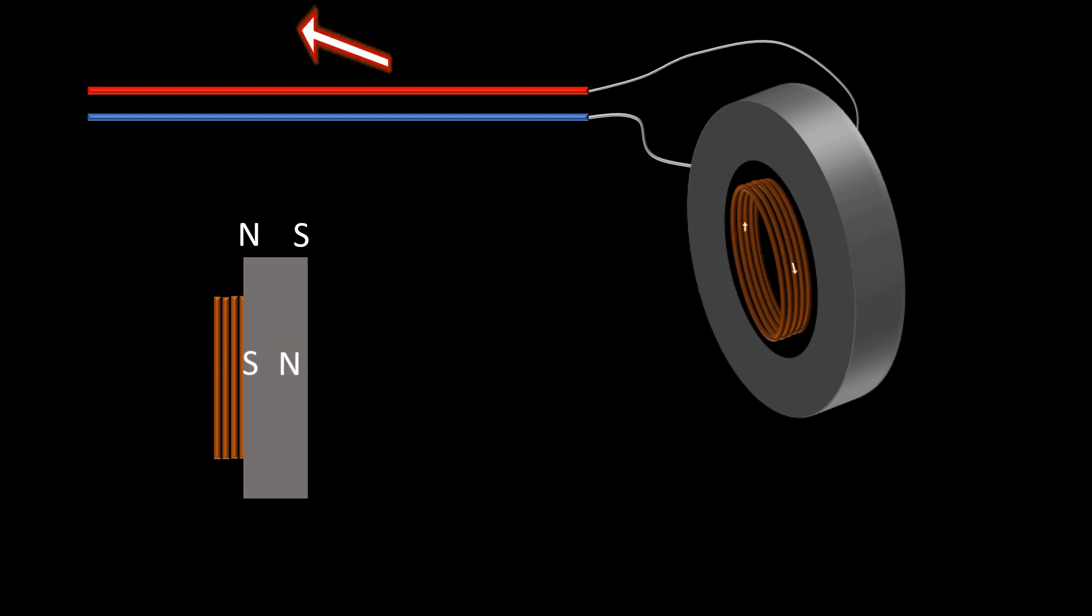If the current reverses, the polarity of the coil will change as well. And as a result, it will be displaced in the opposite direction.